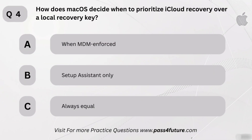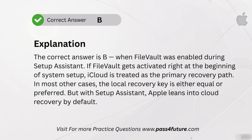Here's a tricky one. How does macOS decide when to prioritize iCloud recovery over a local recovery key? A. When MDM enforced. B. Setup Assistant only. C. Always equal. The correct answer is B — when FileVault was enabled during Setup Assistant. If FileVault gets activated right at the beginning of system setup, iCloud is treated as the primary recovery path. In most other cases, the local recovery key is either equal or preferred. But with Setup Assistant, Apple leans into cloud recovery by default.